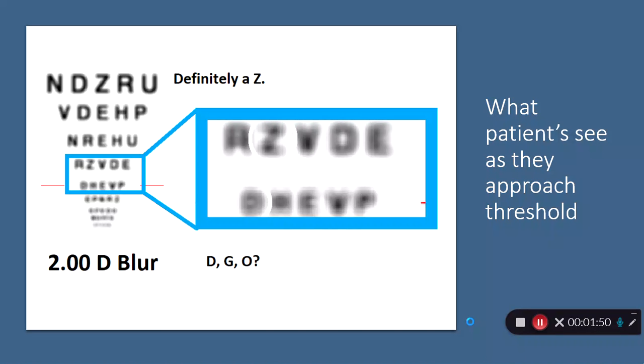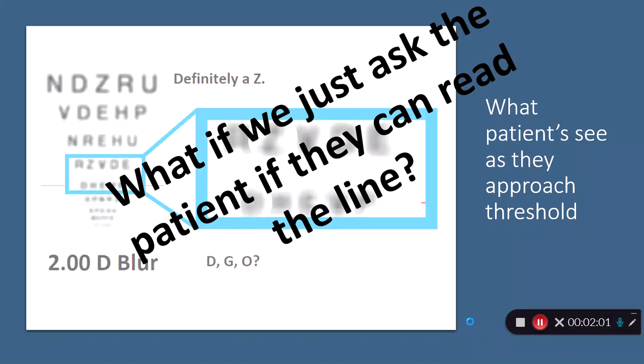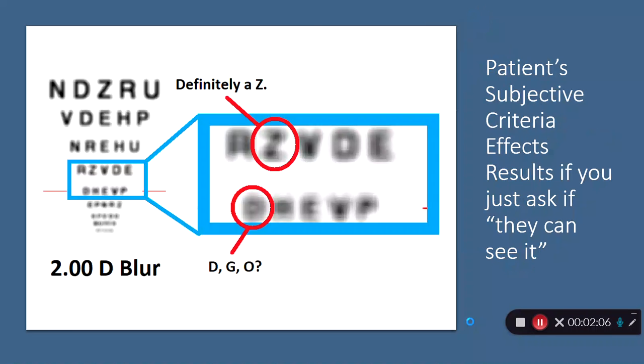But what's the patient see as they approach their threshold? Well, here we have two diopters of blur and we have a series of letters, R-Z-V-D-E and D-H-E-V-P. What if we just ask the patient if they can read the line? Well, they might look at this Z here, and it's definitely a Z. So I can easily see that I'd say a Z. Conversely, they see this letter down here in the bottom circle and they see D, or maybe it's a G, or maybe it's an O.